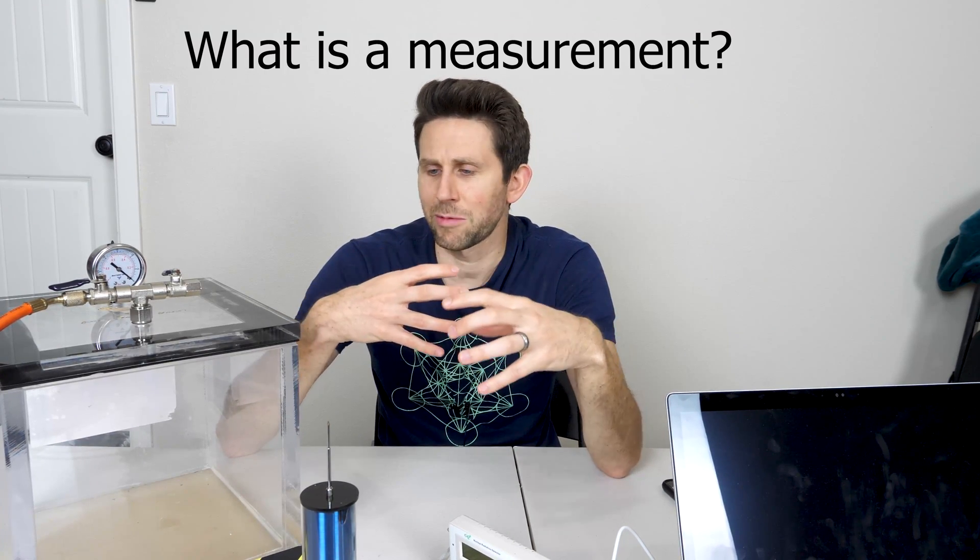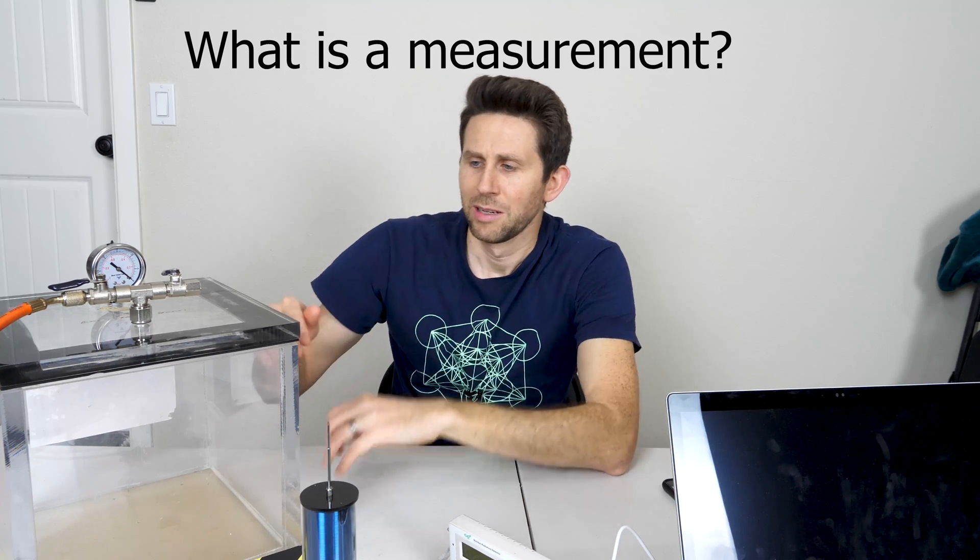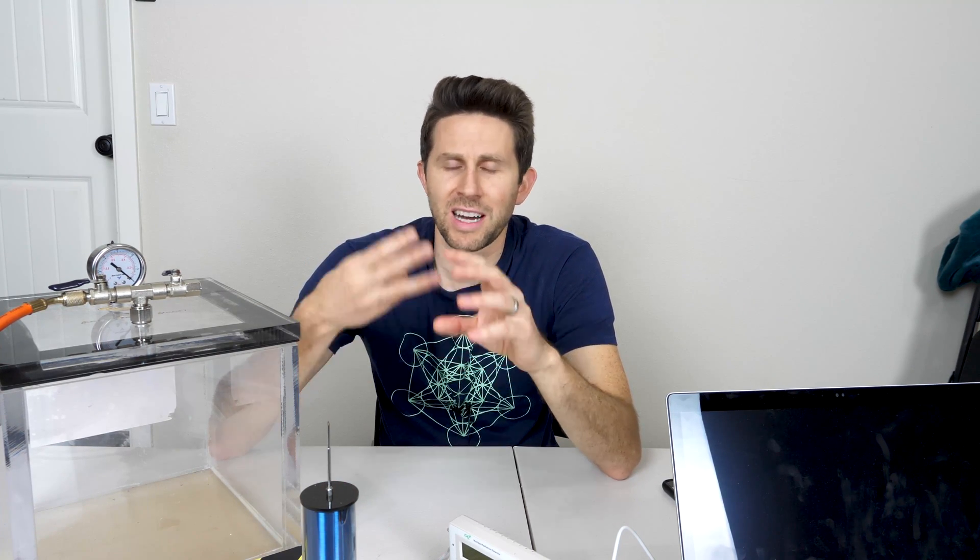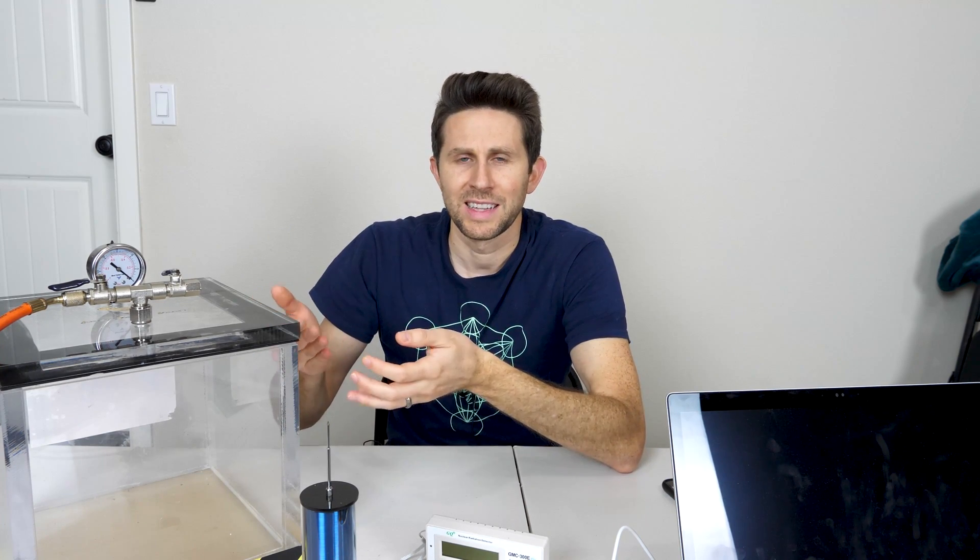In this experiment, basically what we had is three different things that we could count as measurement. We could say that the flies themselves were measuring themselves. Every moment the flies knew that they were not dead, that means that there were not three decays within one second. So basically just the fact that these flies are conscious and able to know whether they're dead or alive, that means that they were continually taking a measurement throughout the whole experiment. So they were never actually in a superposition.